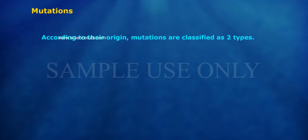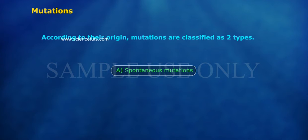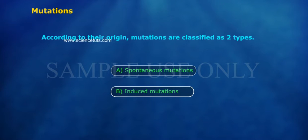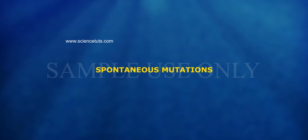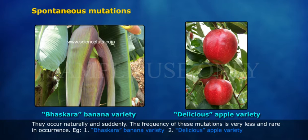According to their origin, mutations are classified as two types: A. Spontaneous mutations, and B. Induced mutations. Spontaneous mutations occur naturally and suddenly. The frequency of these mutations is very less and rare in occurrence.